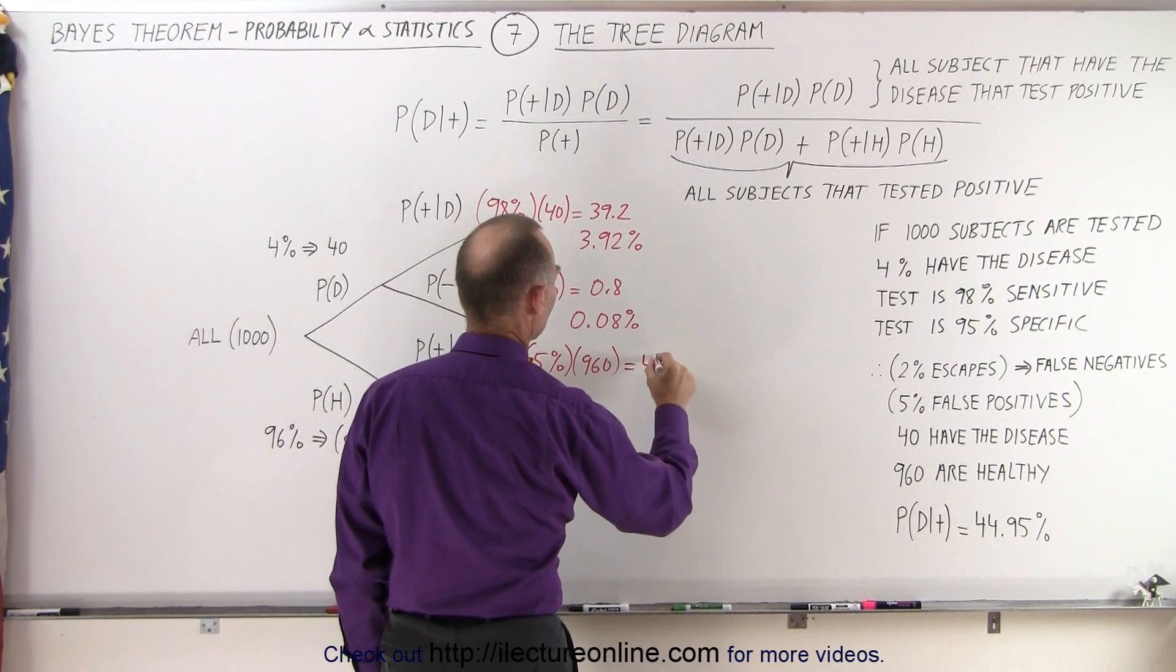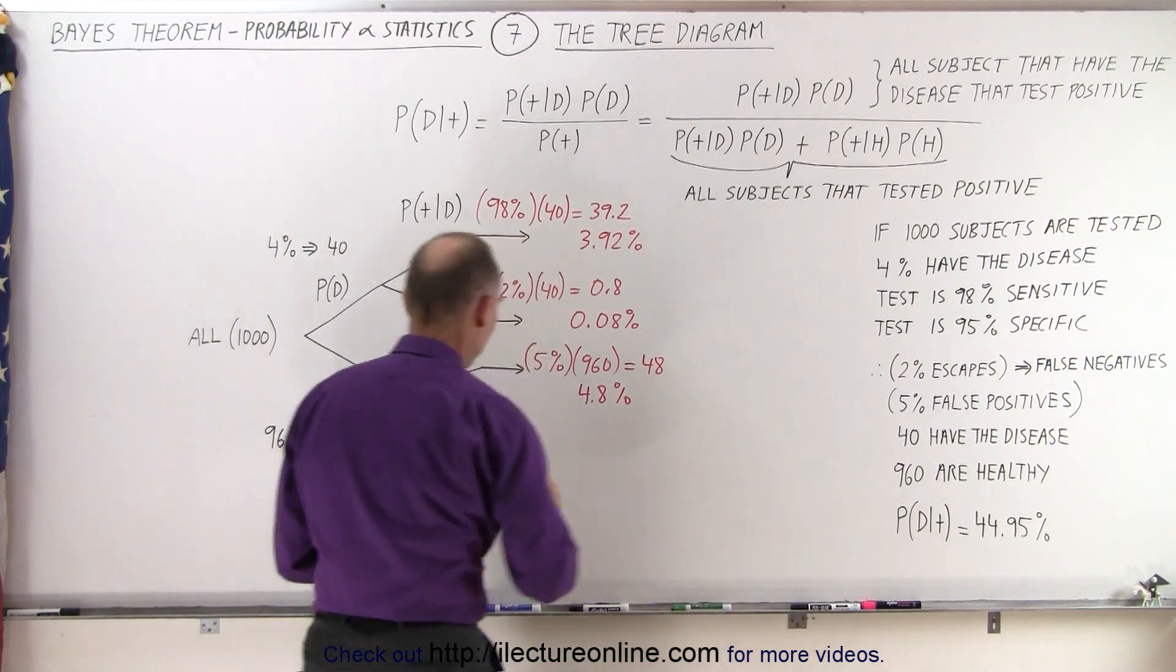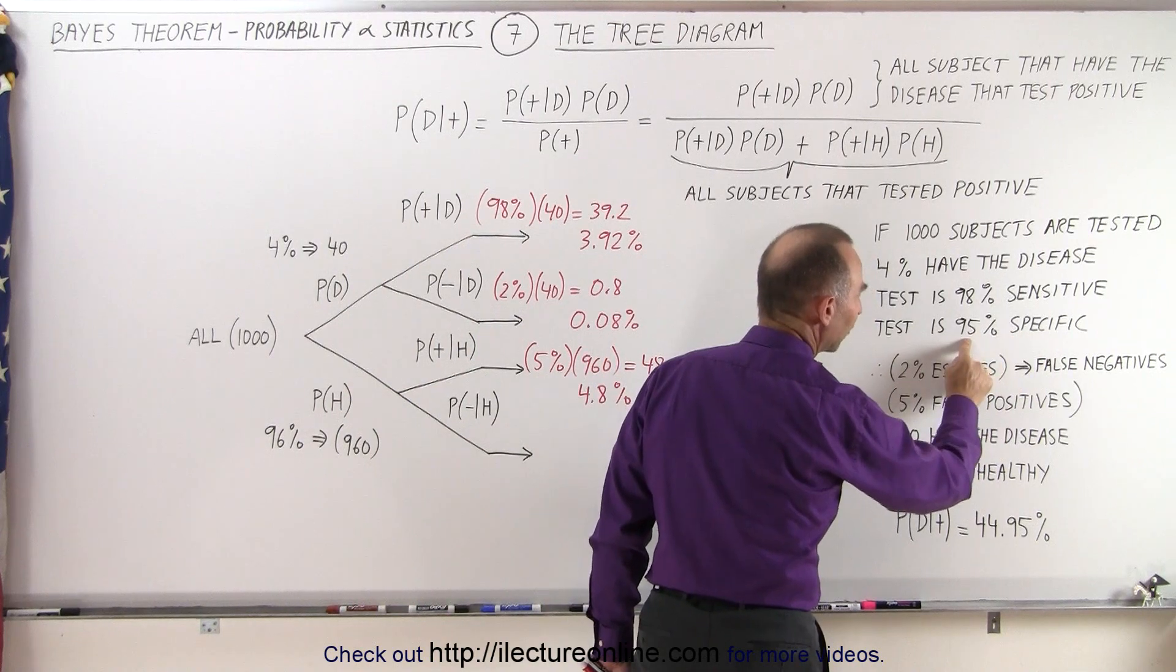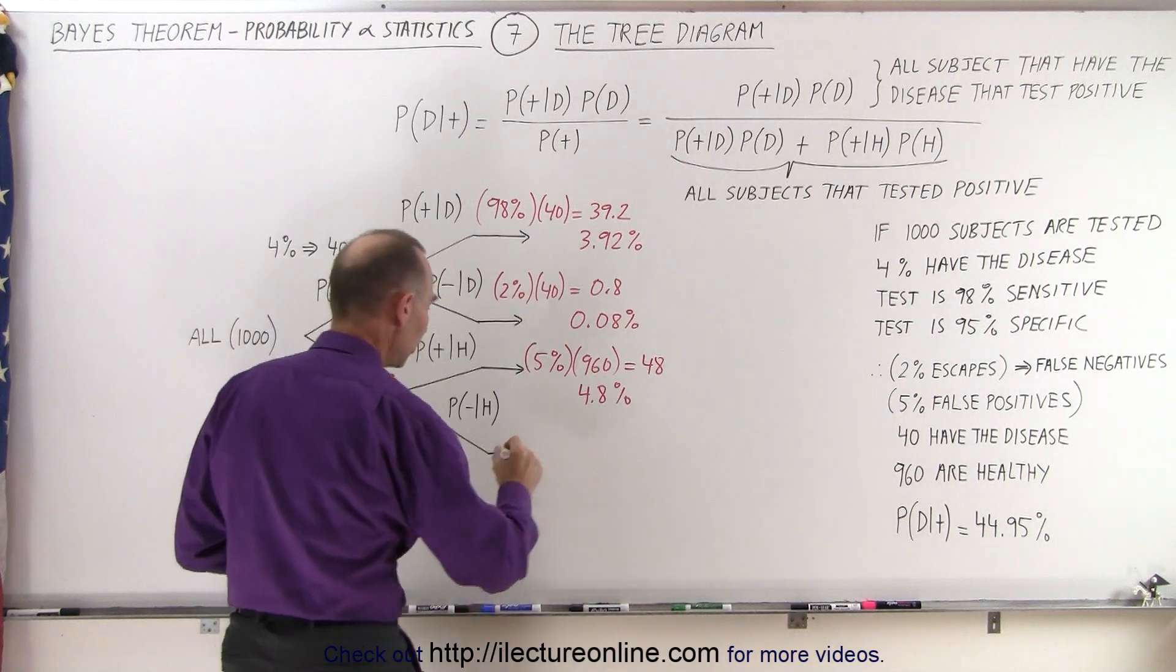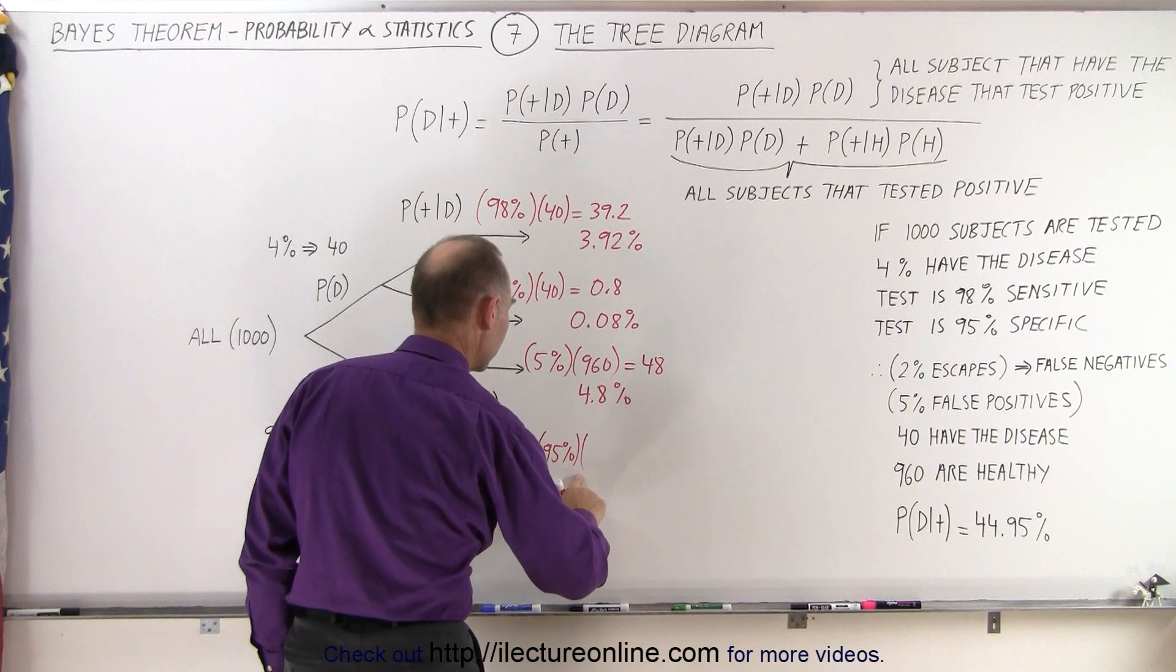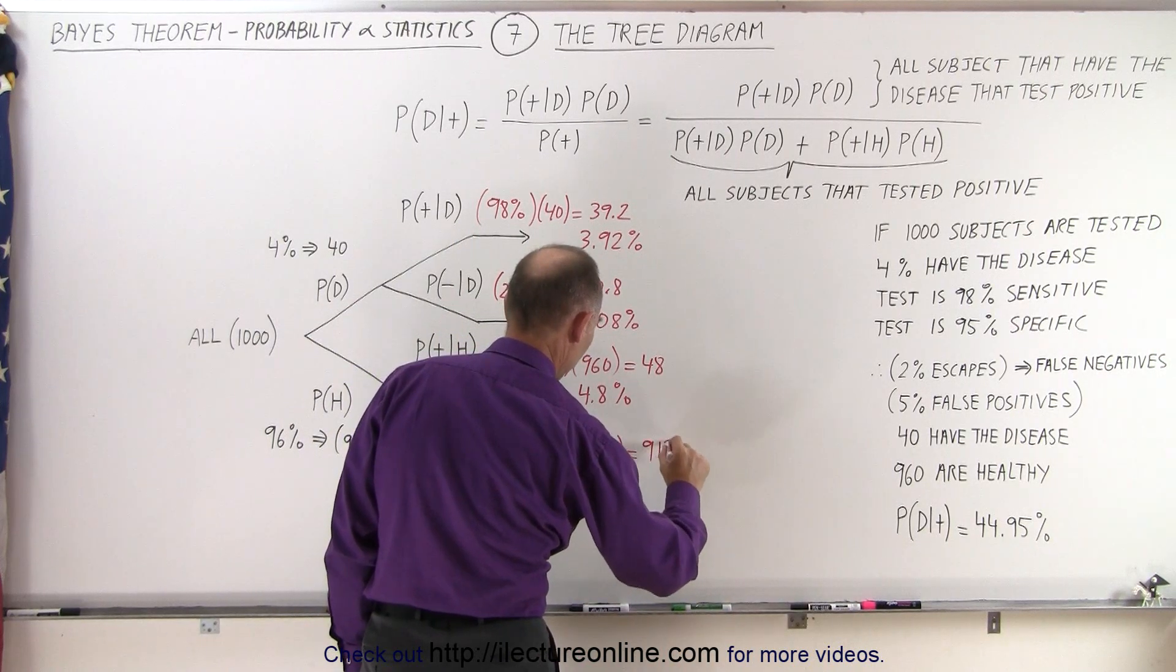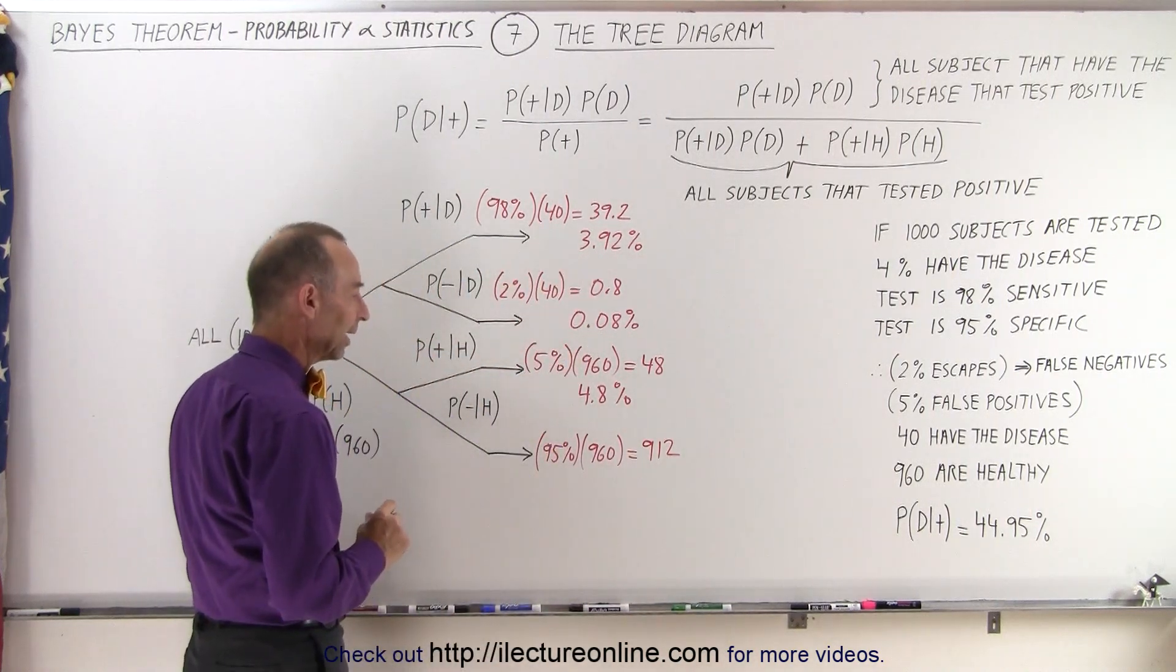And finally, we're looking at all the ones that are healthy and that test negative. So we look at the specificity, 95%. So 95% of the ones that are healthy will test negative. We multiply this times 95%, and the number is 960. That would be equal to, let's see here, that would be 912, I believe. Yep, that is correct, 912. And that would become 91.2%.